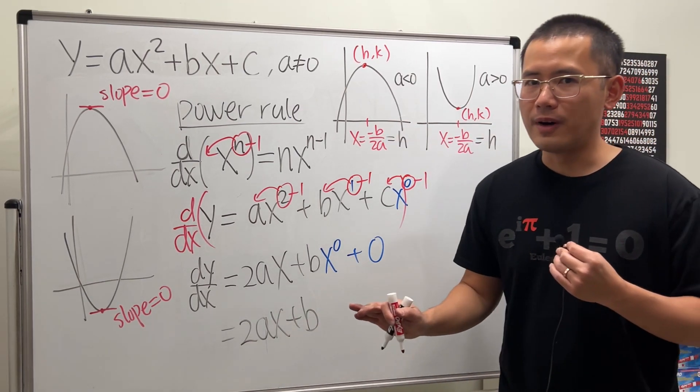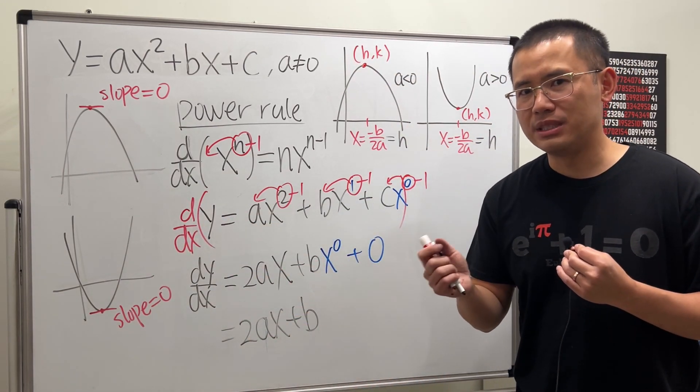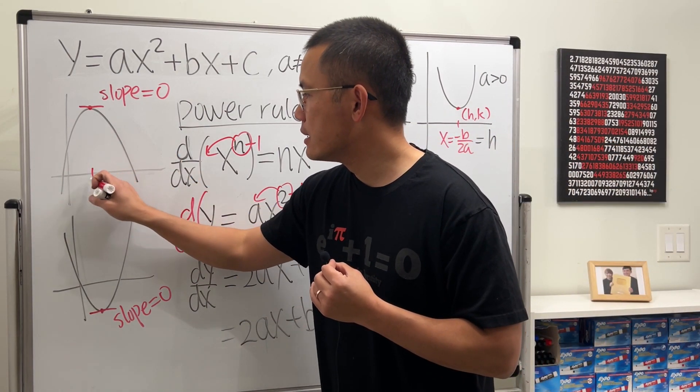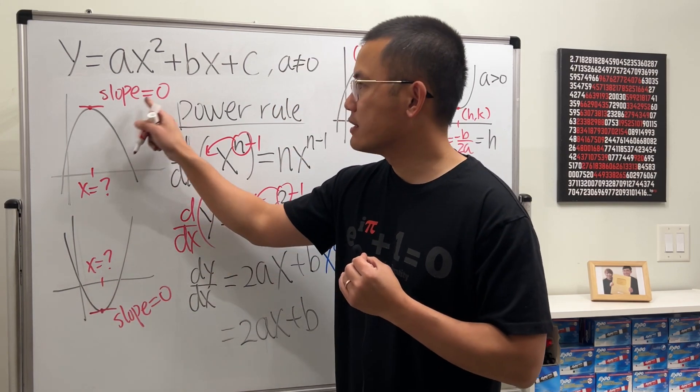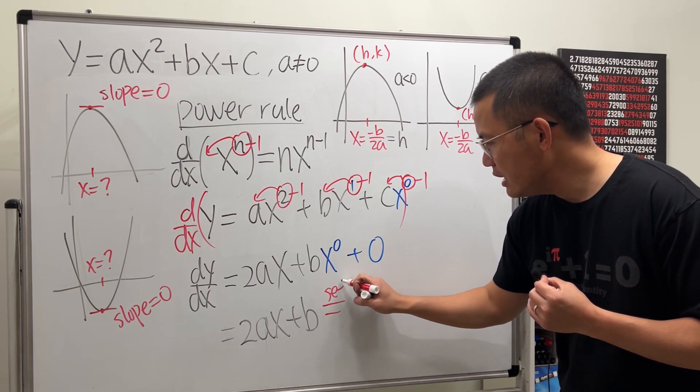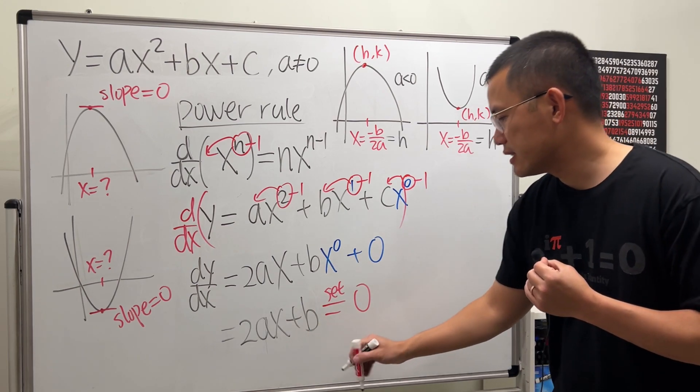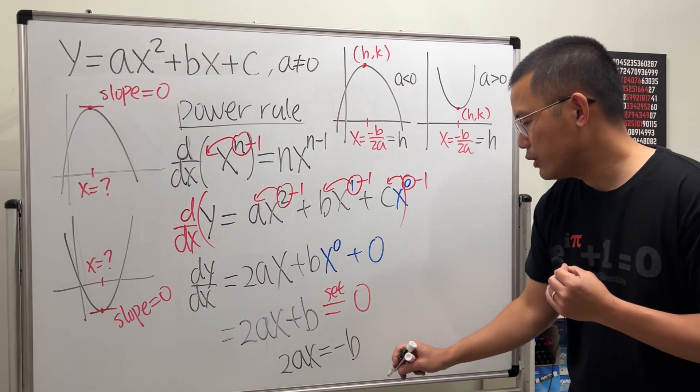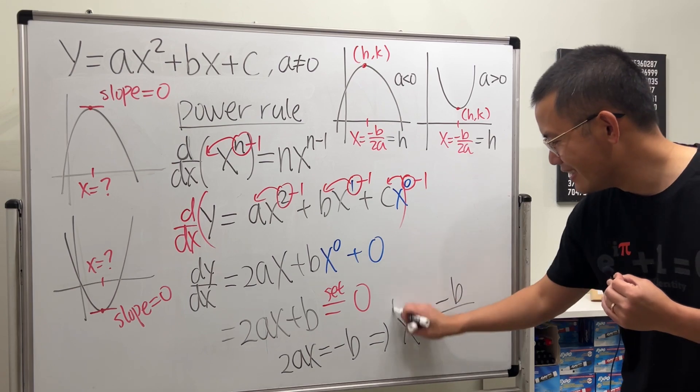This will tell you the slope value at any x that you want on the graph. But, we are trying to find out at what x value will give us slope that's equal to 0. So, we are going to set it equal to 0 and solve for x. Put the b to the other side. 2ax equals negative b and then divide the 2a to both sides. x equals negative b over 2a. Whoa!